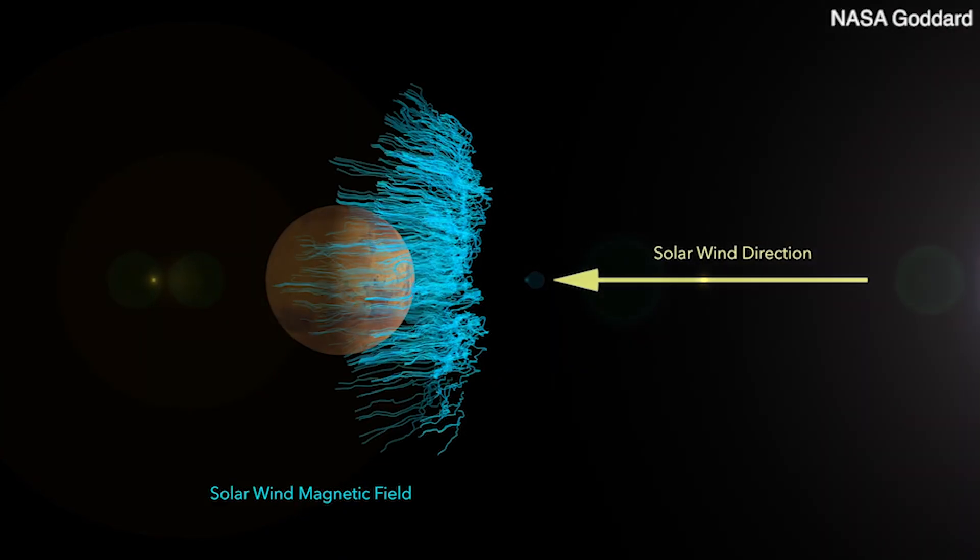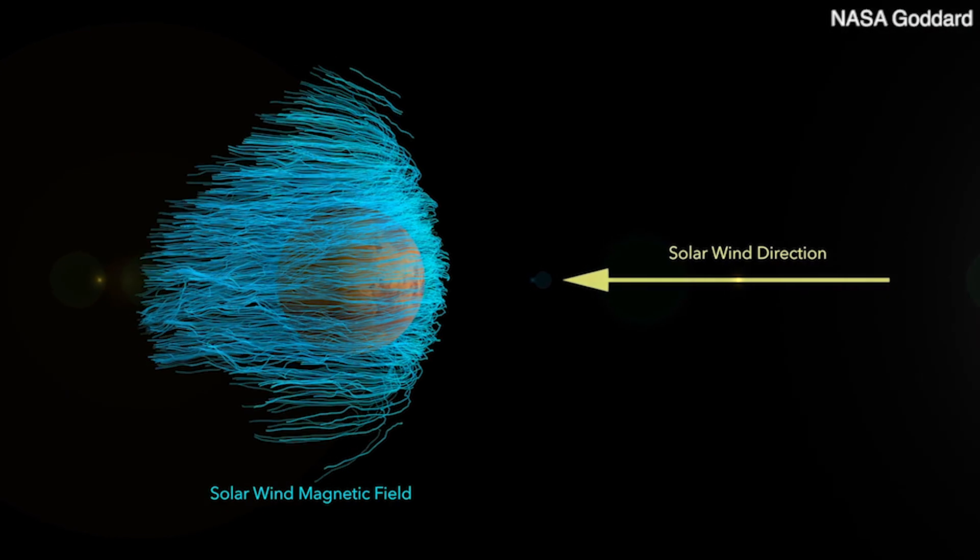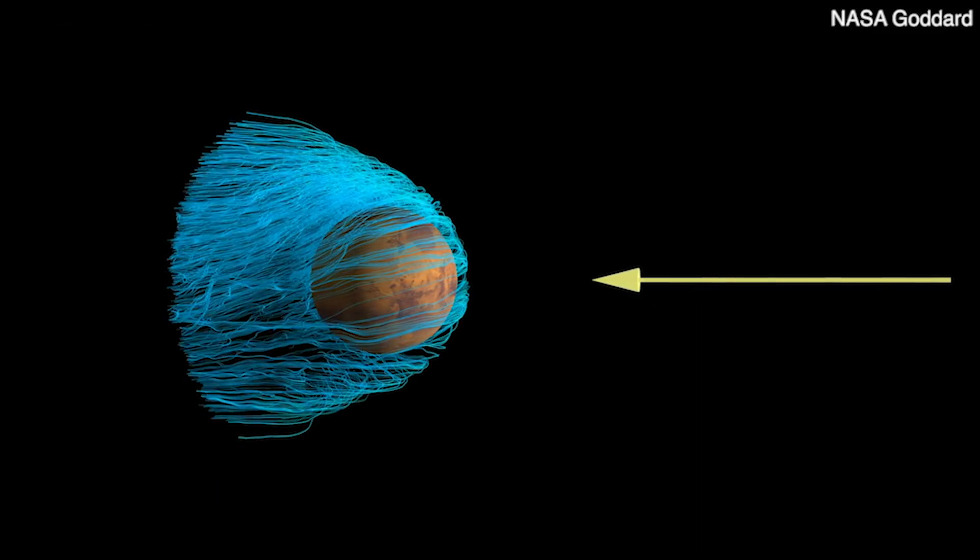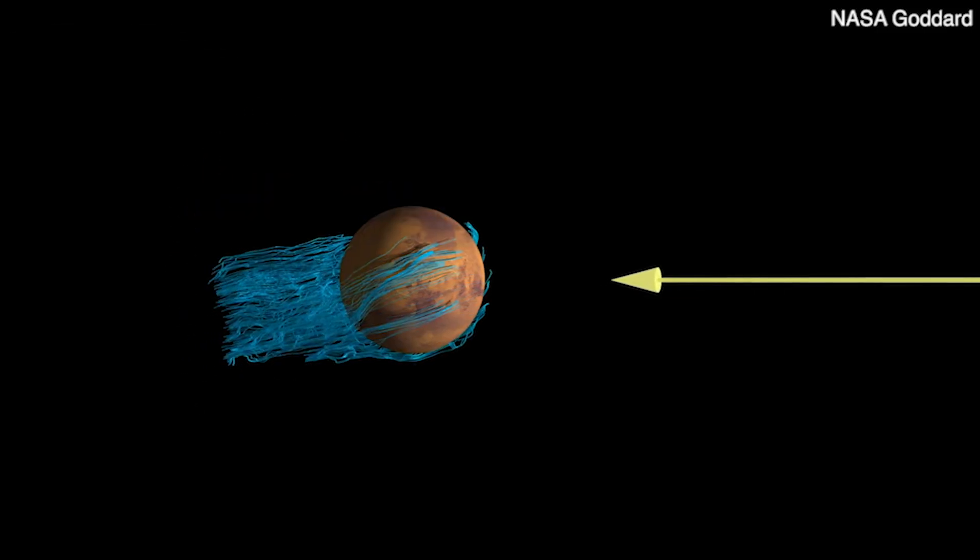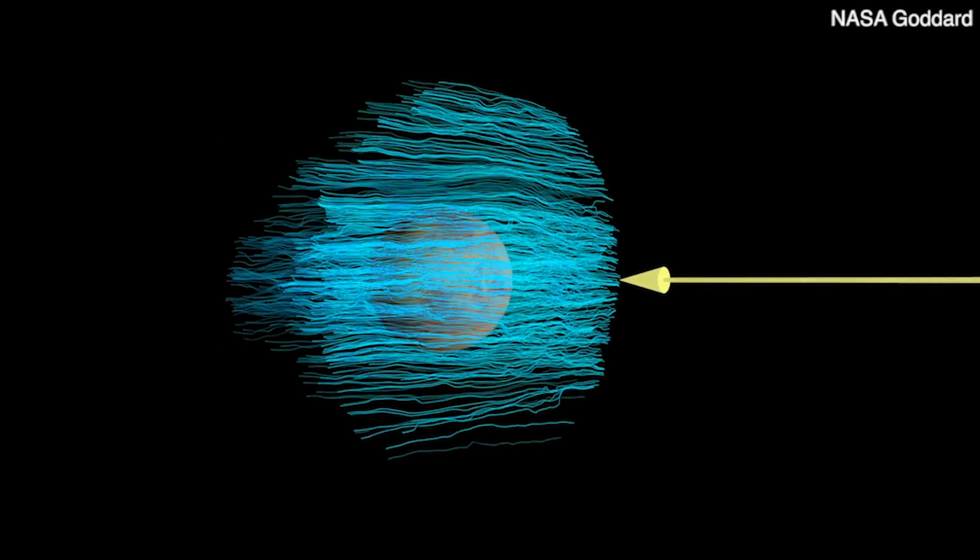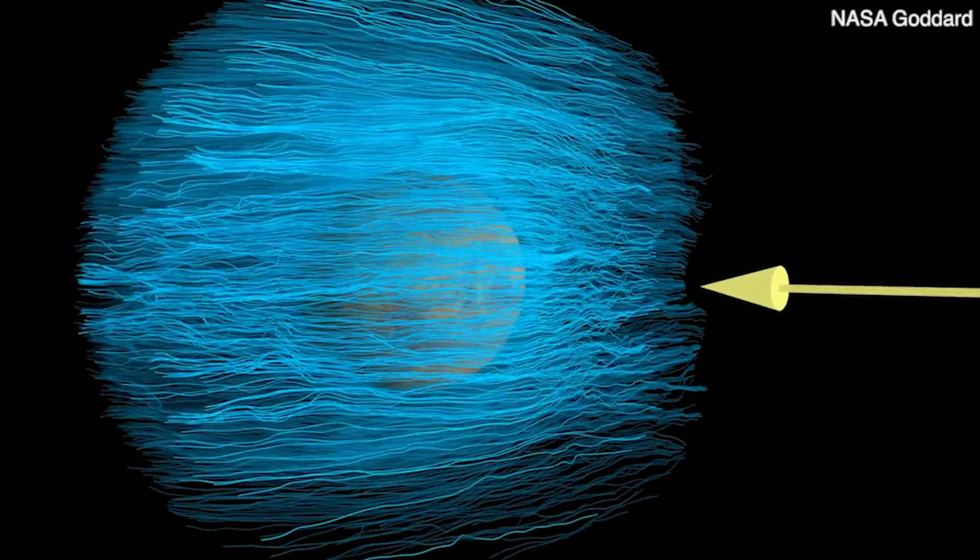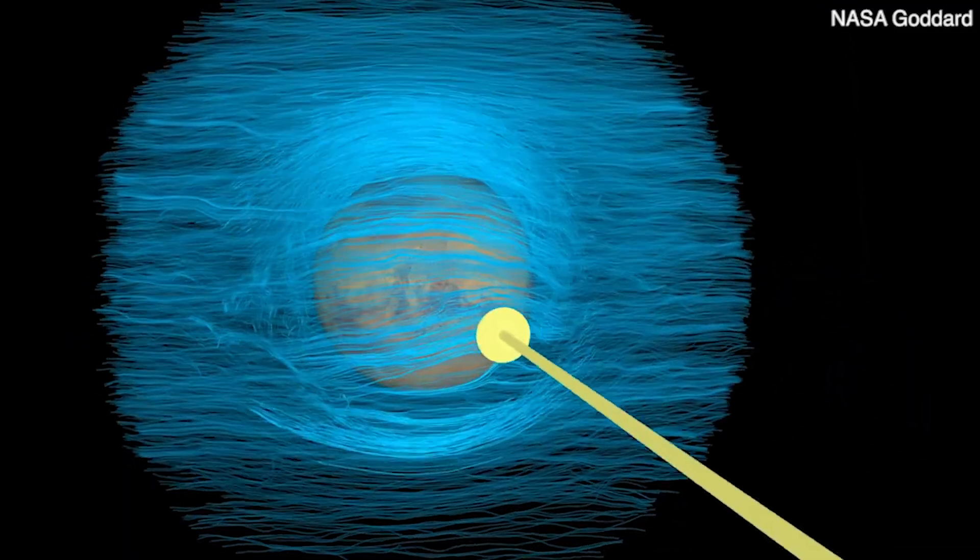The magnetic field in the solar wind is straight lines - you can think of straight spaghetti noodles - and it's flowing towards the planet. Those spaghetti noodles wrap around this basketball-shaped planet, and that's indeed what we saw in the data: the magnetic field lines draping around Mars as a planet.